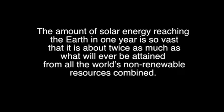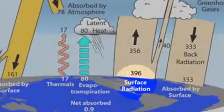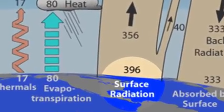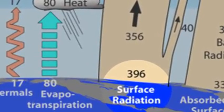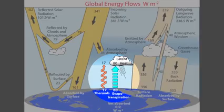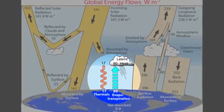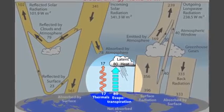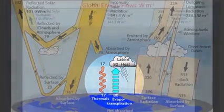To ensure Earth doesn't overheat by constantly absorbing more and more energy, the Earth emits infrared long-wave radiation, heat, back to the atmosphere. It also emits energy through thermals and evapotranspiration, where energy evaporates water on Earth's surface and then releases that energy to the atmosphere during condensation.